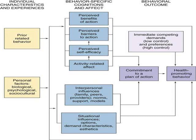Behavior-specific cognition and affect includes perceived benefits of action — for example, if I want to take a health-related action like going for a morning walk, I will think about what benefit I will get from it. If I believe I will benefit, I will be motivated to pursue that action. There are also perceived barriers to action — for example, my office timing is too early, so I cannot go for a morning walk.